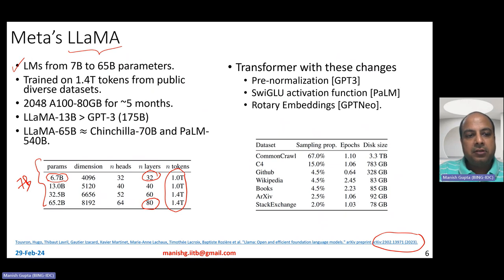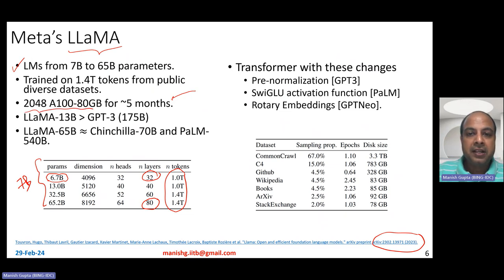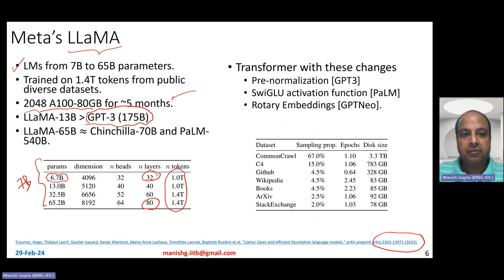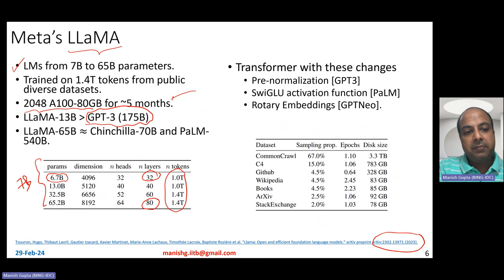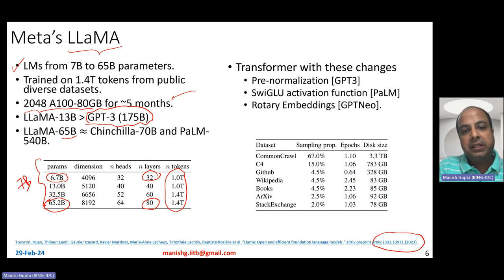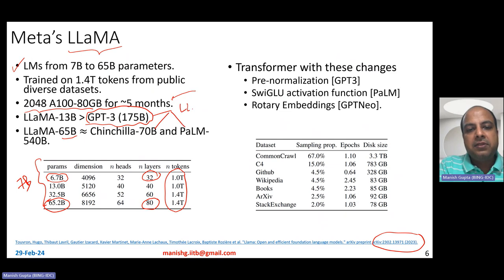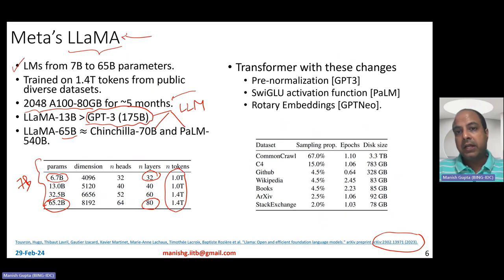Training required huge compute: 2048 machines with 80 GB VRAM for five months. The results were remarkable — LLaMA 13 billion was better than GPT-3 175 billion on several NLP benchmarks. Their LLaMA 65 billion model was approximately similar in performance to Chinchilla 70 billion and PaLM 540 billion parameter models, showing that a small language model could be comparable or better than LLMs across several NLP benchmarks.